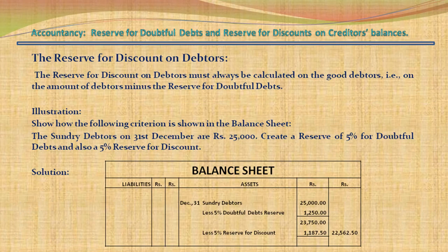Regarding the reserve for discount on debtors: the reserve for discount on debtors must always be calculated on the good debtors — that is, on the amount of debtors minus the reserve for doubtful debts. For example, with sundry debtors of Rs. 25,000, creating a 5% reserve for doubtful debts of Rs. 1,250, and then 5% reserve for discount on the net Rs. 23,750 gives Rs. 1,187.50. The net balance of debtors to be shown in the balance sheet is Rs. 22,562.50.